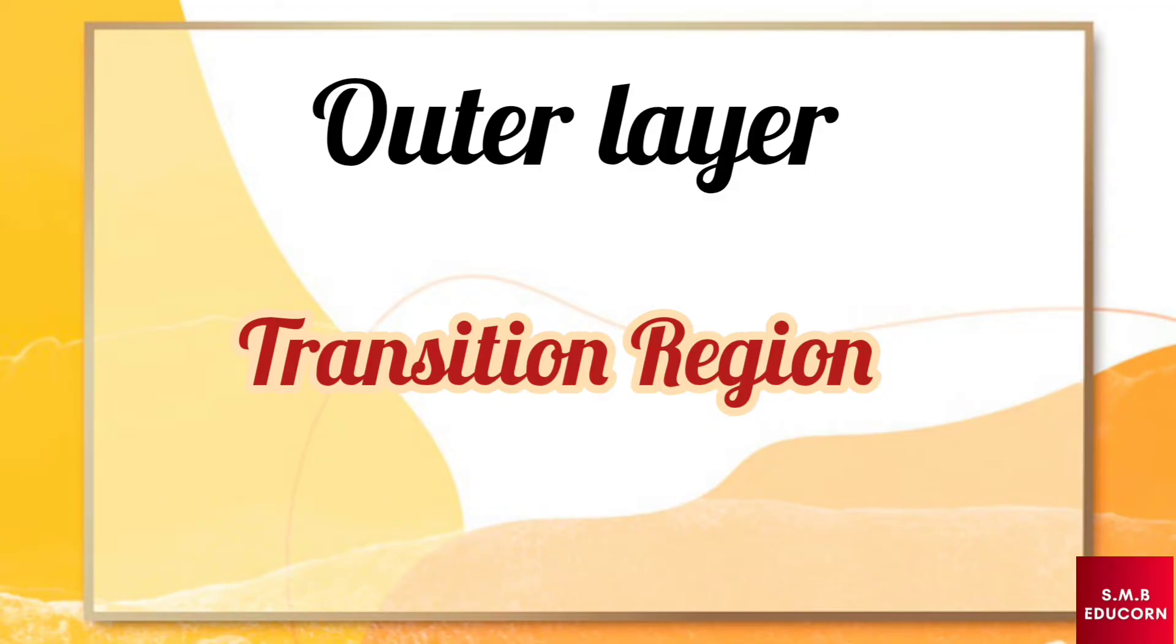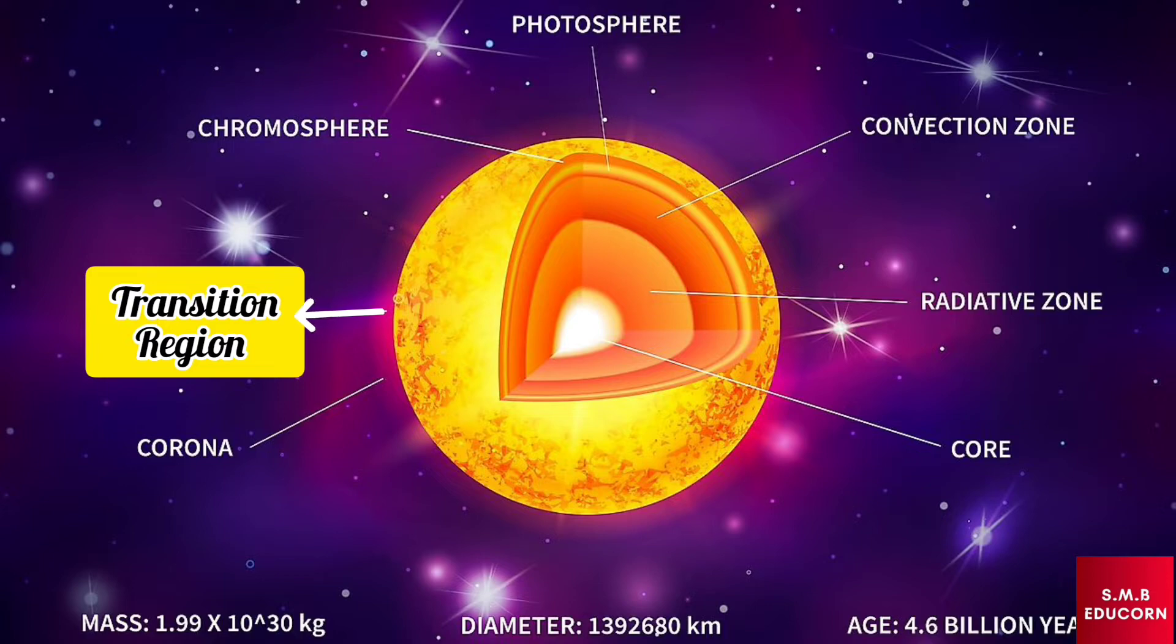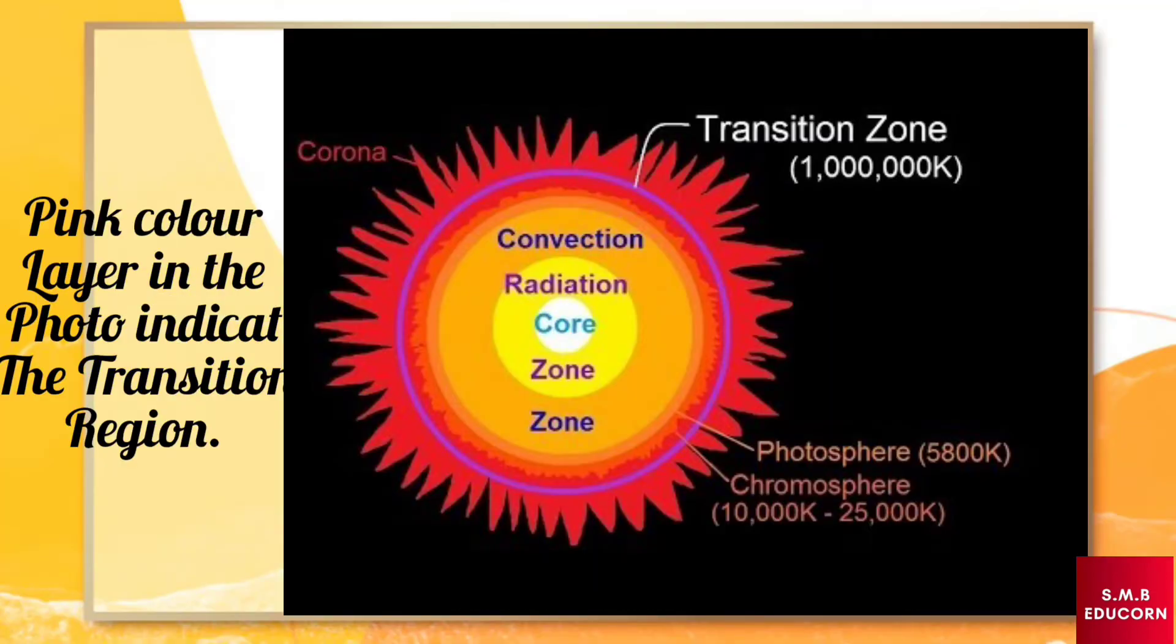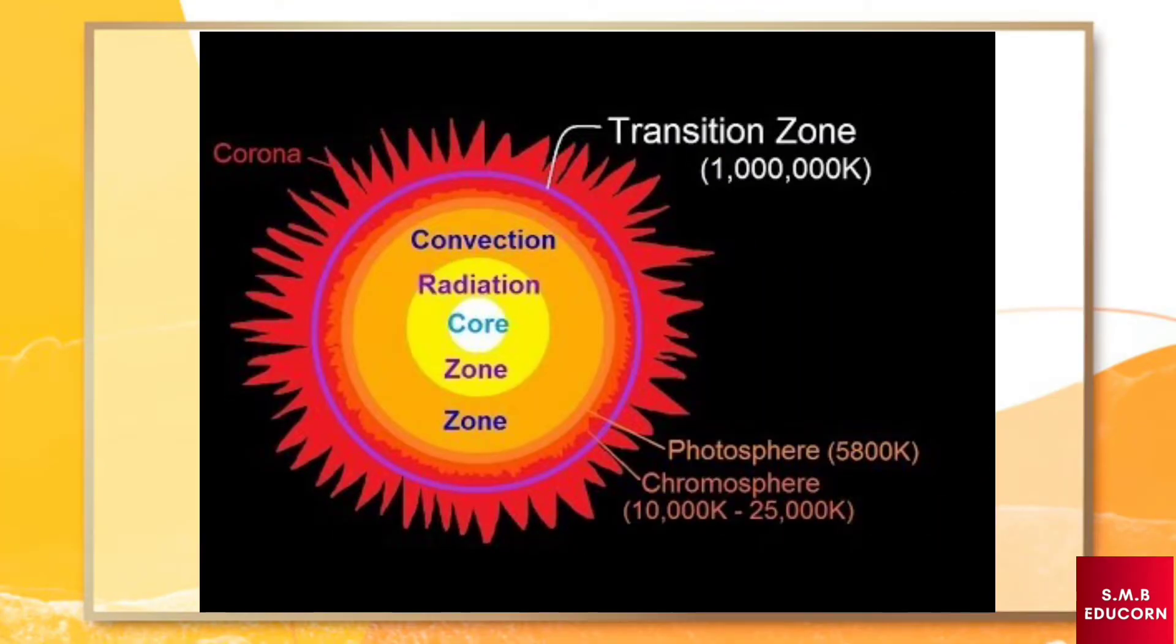Next, there is a transition region in the structure of sun. It is an extremely narrow layer, only 60 miles, which divides the chromosphere from corona. In this transition region, temperature rises drastically.